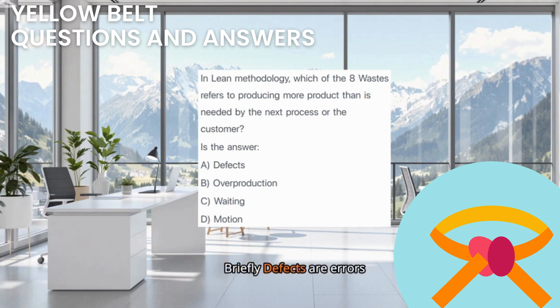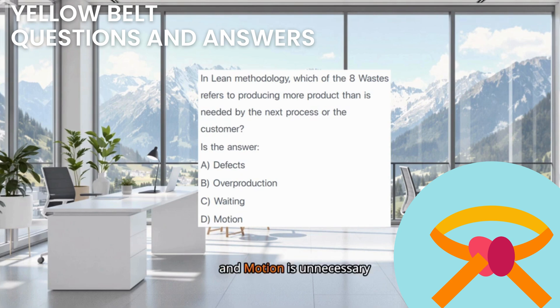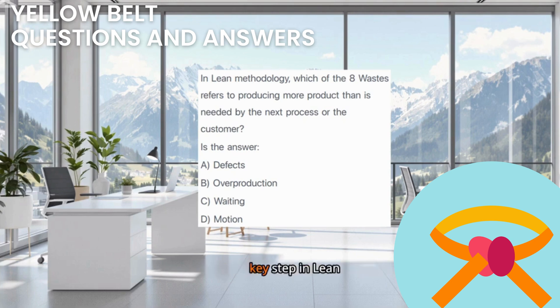Briefly: Defects are errors requiring rework or scrap. Waiting is idle time, and Motion is unnecessary movement by people. Recognizing overproduction is a key step in lean thinking.